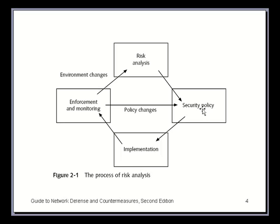With a security policy, we define what we're going to secure and how, then we implement that security policy through various means. This could include insurance, creating new network infrastructure such as firewalls or intrusion detection systems, or new policies for access controls. The next element is enforcement and monitoring — we have to constantly monitor what's going on to make sure our policies are acceptable and being implemented appropriately.